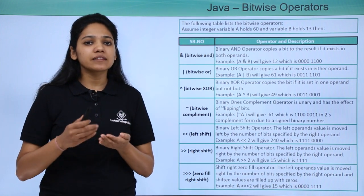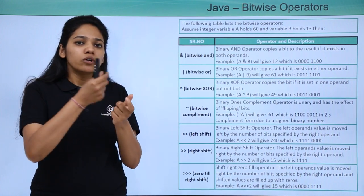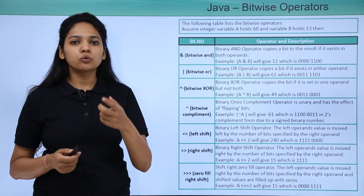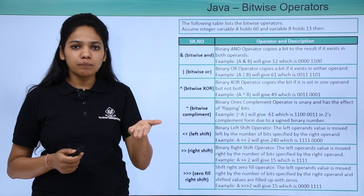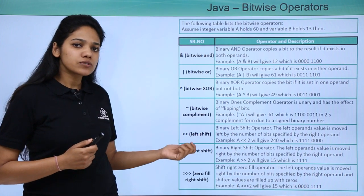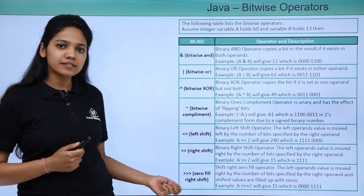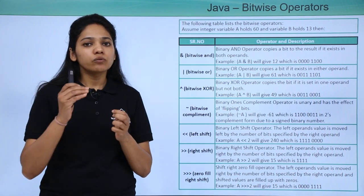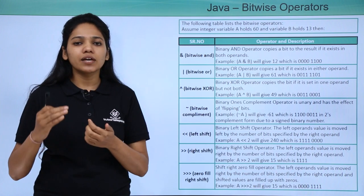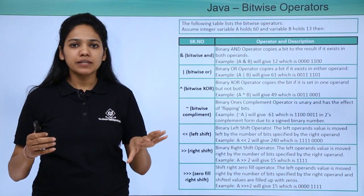Left shift moves the binary value to the left by a specified number of positions — you can give 2 times, 3 times, or any number. Similarly, right shift moves bits to the right, but signed right shift differs from zero-fill right shift. For right shift, the bit moves the specified number of times to the right, while the left side remains the same.